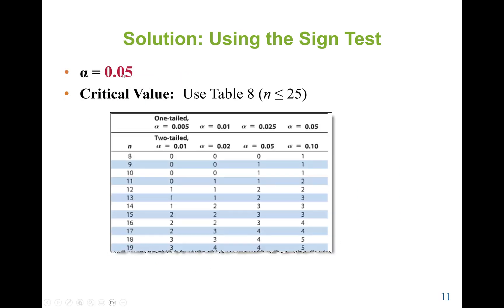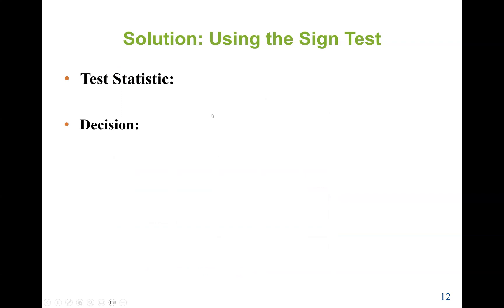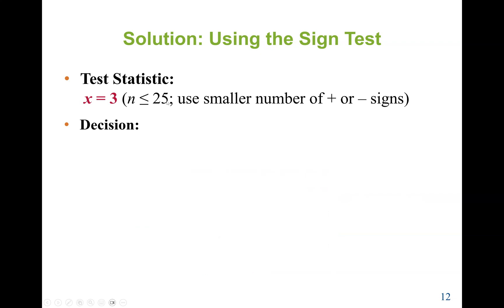Since N = 15 is less than or equal to 25, we use table 8. At N = 15 and alpha = 0.05, the critical value is 3. For the test statistic, since the sample size is ≤ 25, we use the smaller number of positive or negative signs. Negative = 3 is the smallest, so X = 3. The test statistic equals the critical value, so we reject H0.